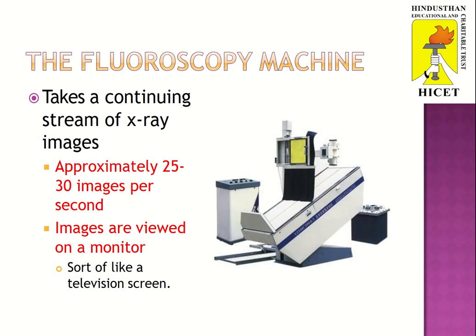The fluoroscopy machine takes a continuous stream of x-ray images. Approximately 25 to 30 images per second are taken. The images are viewed on a monitor, which is sort of like a television screen.